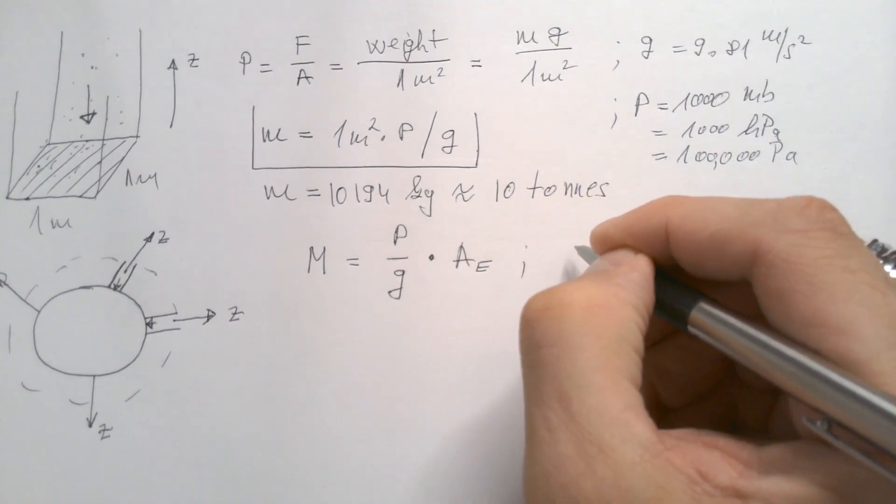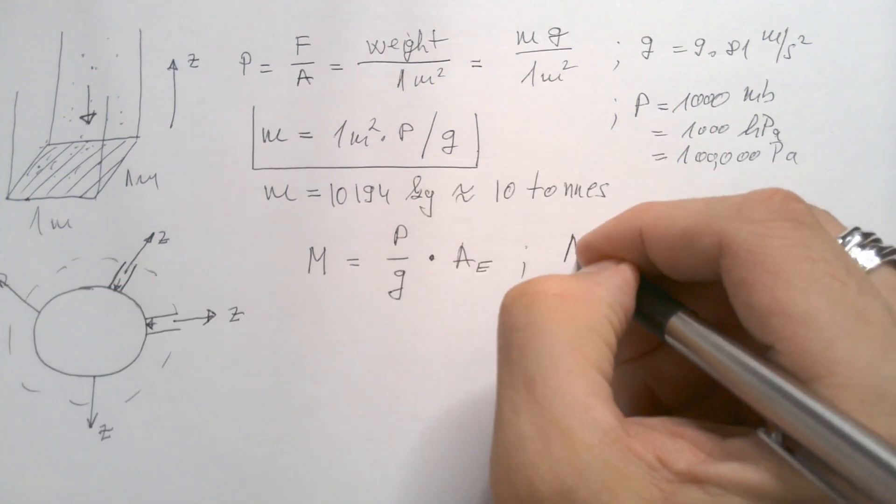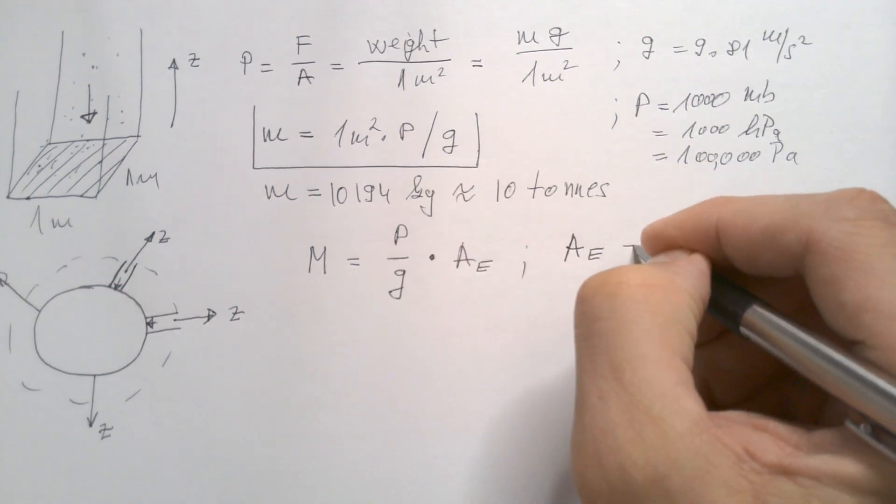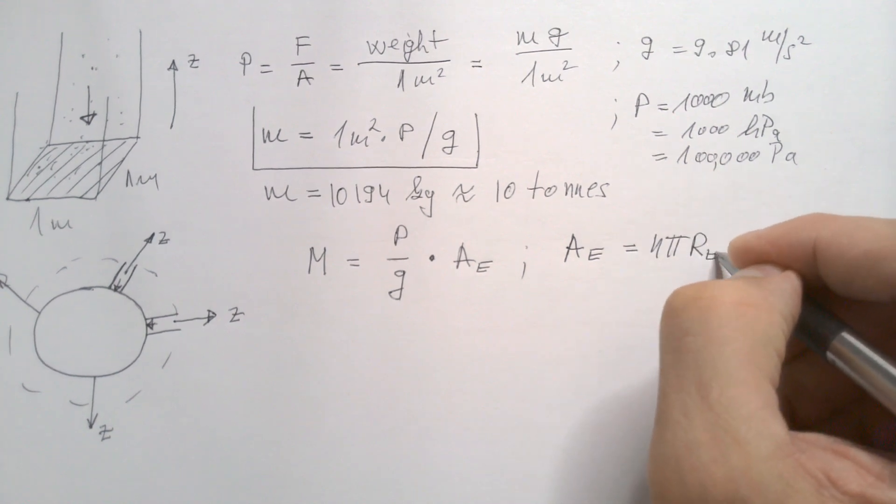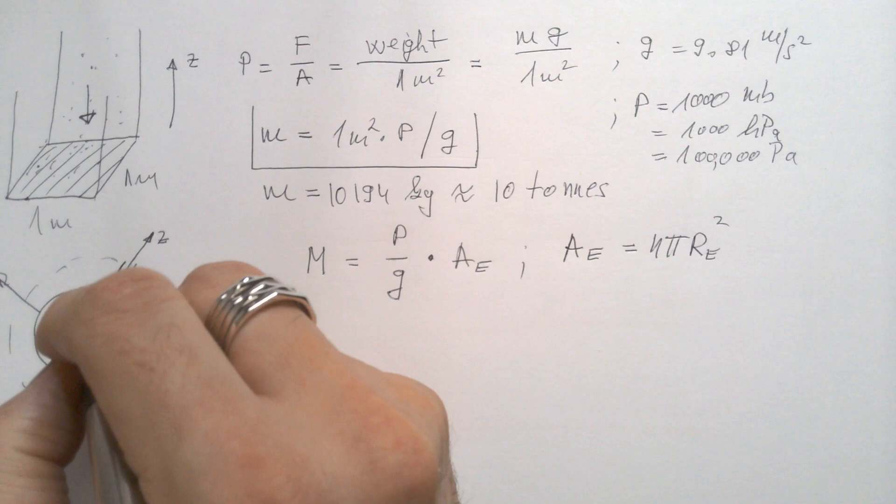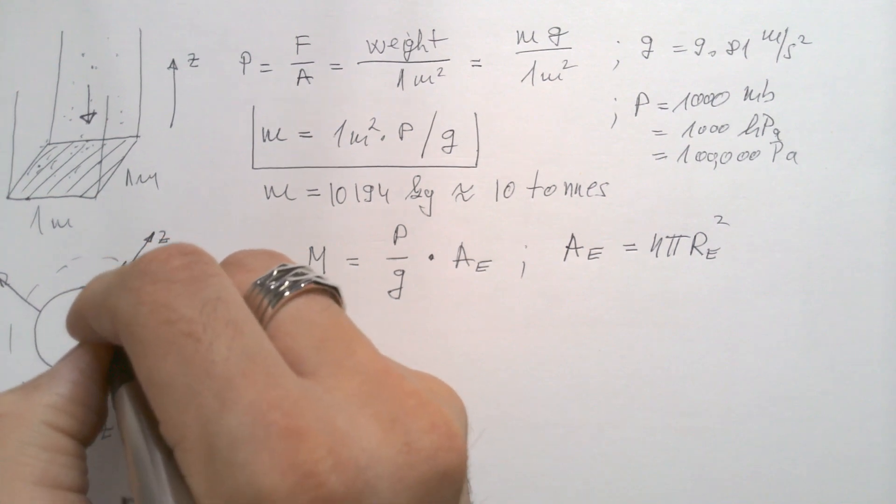Well, we approximate that Earth is a sphere, and area of a sphere, area of an Earth, is 4 pi radius of the Earth squared. Whereas this is the radius of the Earth.